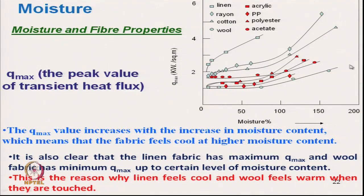Wool has the least Q max value. So for any moisture or any relative humidity, if we touch linen fabric it will be cool in touch, and wool will be warm in touch.